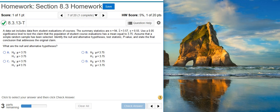Here's our problem statement. A data set includes data from student evaluations of courses. The summary statistics are sample size n equals 94, sample mean x-bar equals 3.57, and sample standard deviation equals 0.55. Use a 5% significance level to test the claim that the population of student course evaluations has a mean equal to 3.75. Assume that a simple random sample has been selected.